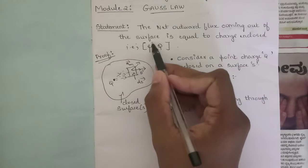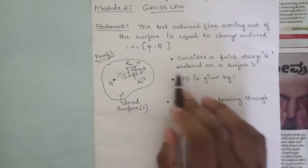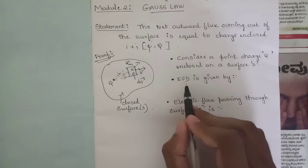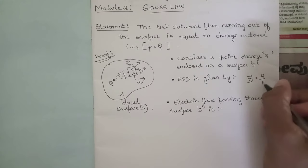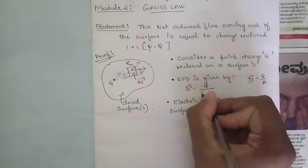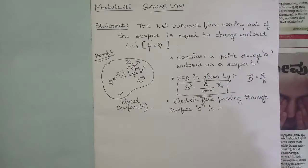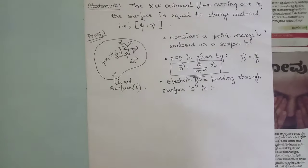We need to prove that ψ = q. Consider a point charge q enclosed within a surface. From this, we get the electric flux density D, which was discussed in the first module. Recall that D equals charge per unit area; in this case, D = q / (4πr²) · ar. This relation will be used for the derivation.